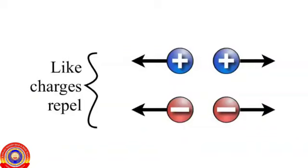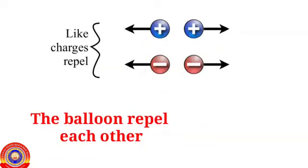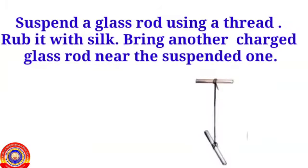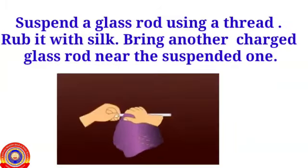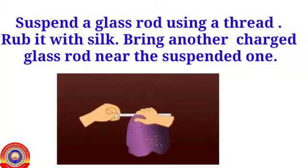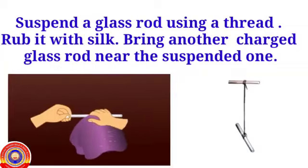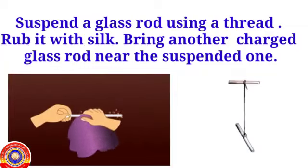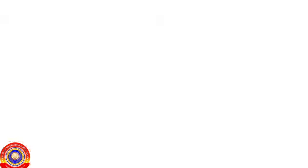Like charges repel each other. So the balloons repel each other when the flannel is removed from them. Then, suspend a glass rod using a thread and rub it with silk. Bring another charged glass rod near the suspended one. What do you observe? Yes, the rods will repel each other.